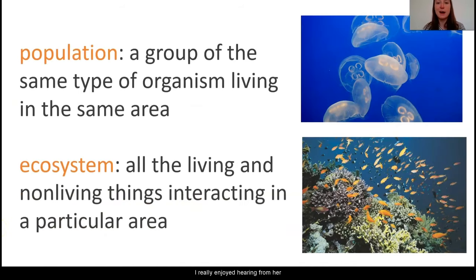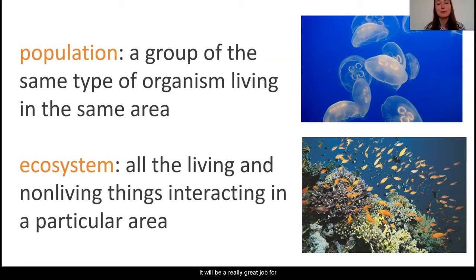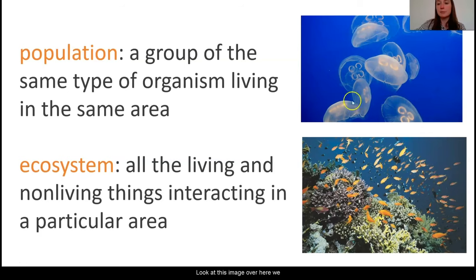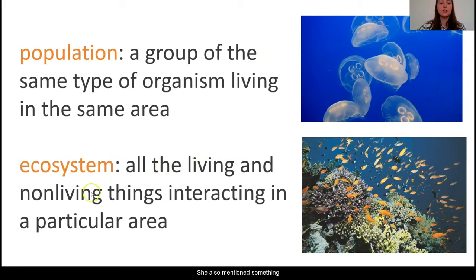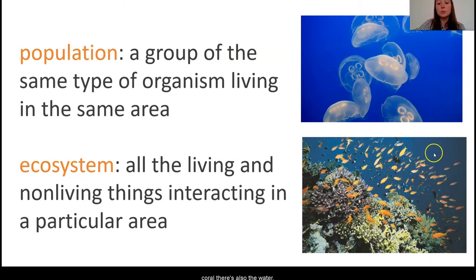I really enjoyed hearing from her about what she loves to study in the moon jelly population. It seems really cool that she gets to work outside but also study science in the lab. As she gave us information, I heard her use the word population — what she means is a group of organisms that are the same type living in the same area. Looking at this image, we can see many moon jellies all in one area together. She also mentioned an ecosystem — all of the living things and non-living things in a particular area, including different types of fish, plants, coral, and water, all interacting with one another.